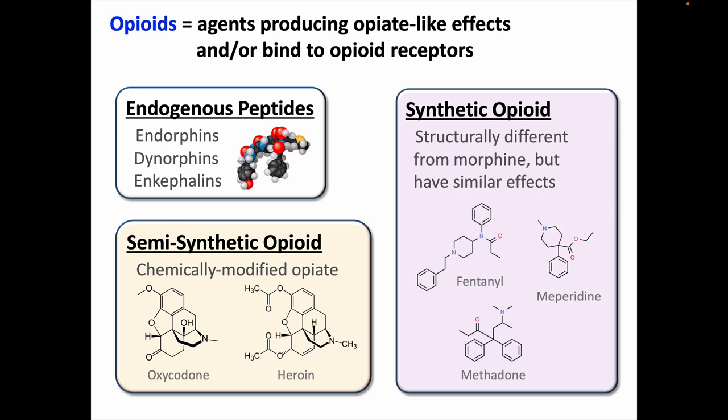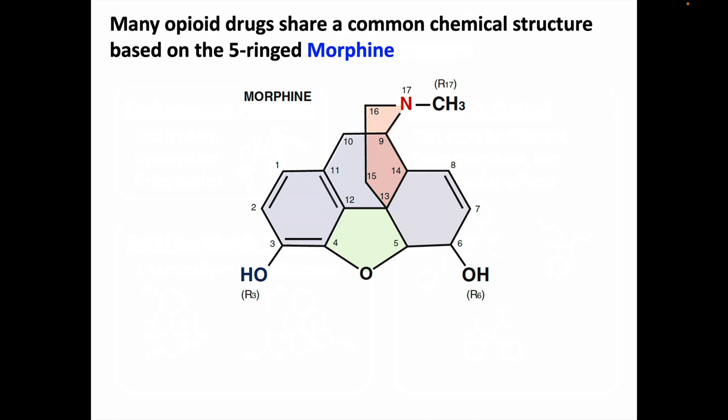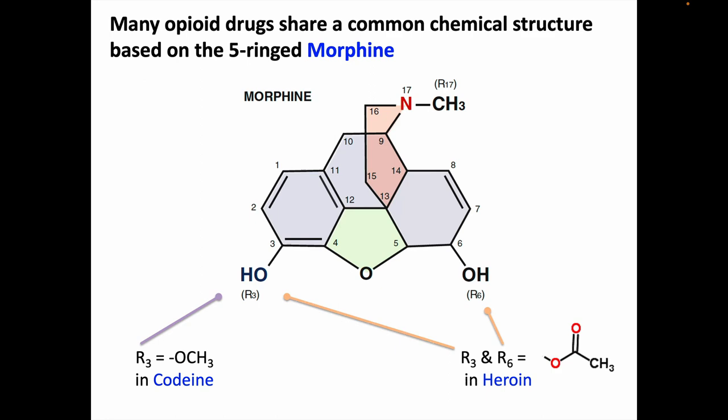We've already seen that many opioid drugs share a common five-ringed chemical structure, as seen in morphine. If the hydroxyl group on carbon-3 is replaced with a methoxy group, then you've got codeine. And if the hydroxyl groups on carbons 3 and 6 are acetylated, you've got heroin.